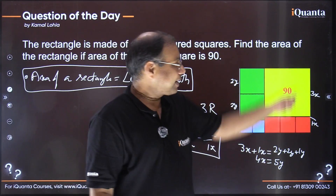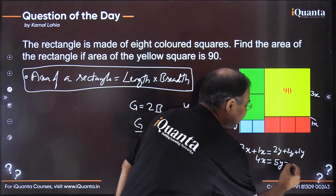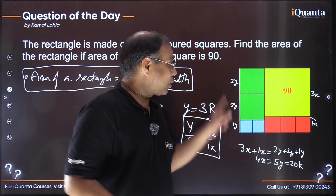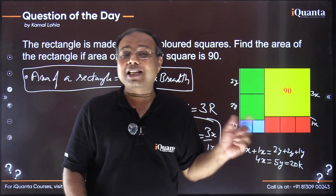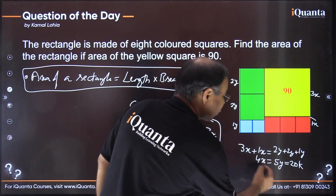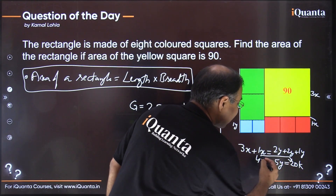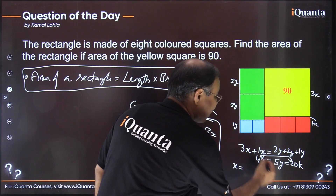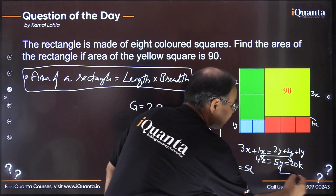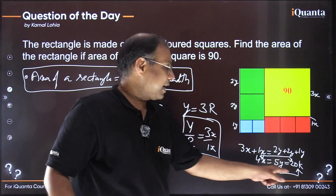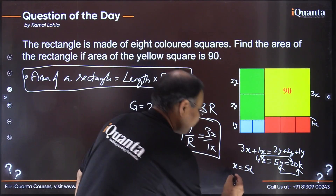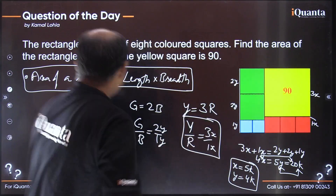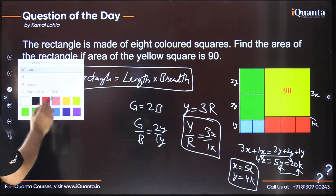We have the relation 4x = 5y. Let both equal 20k. Then: 4x = 20k → x = 5k, and 5y = 20k → y = 4k. Now we can convert all dimensions into the common variable k. The height of the rectangle becomes 3x + 1x = 15k + 5k = 20k.